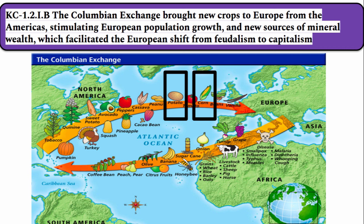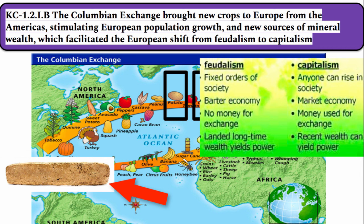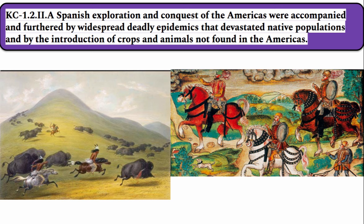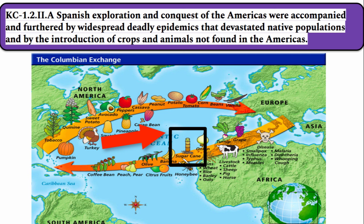For example, maize and potatoes are products of the Western Hemisphere and were responsible for large increases in the population of Europe. Mineral wealth, especially gold and silver, like that gold bar Cortez melted down from Aztec treasures, helped speed the transition from feudalism to capitalism, and all of the trade of the colonies will be regulated under the concept of mercantilism. While Europe will experience a population boom, Spanish exploration and the conquest of the Americas were accompanied by widespread deadly epidemics that devastated native populations and by the introduction of crops and animals not found in the Americas. The spread of disease, especially smallpox, will decimate many indigenous groups. The introduction of horses by the Spanish will be a game-changer for many tribes, especially on the Great Plains.